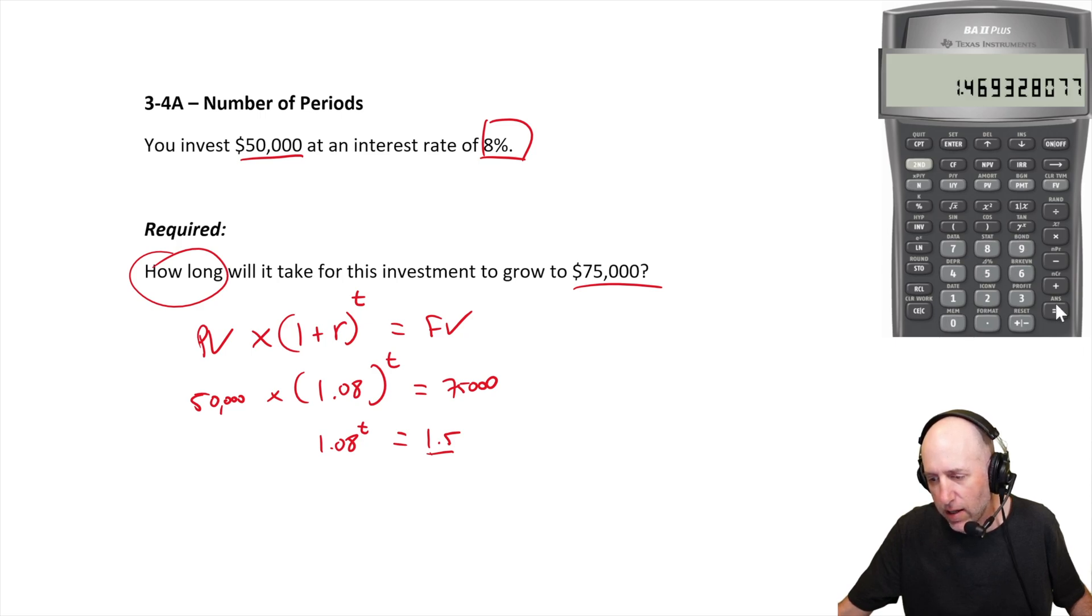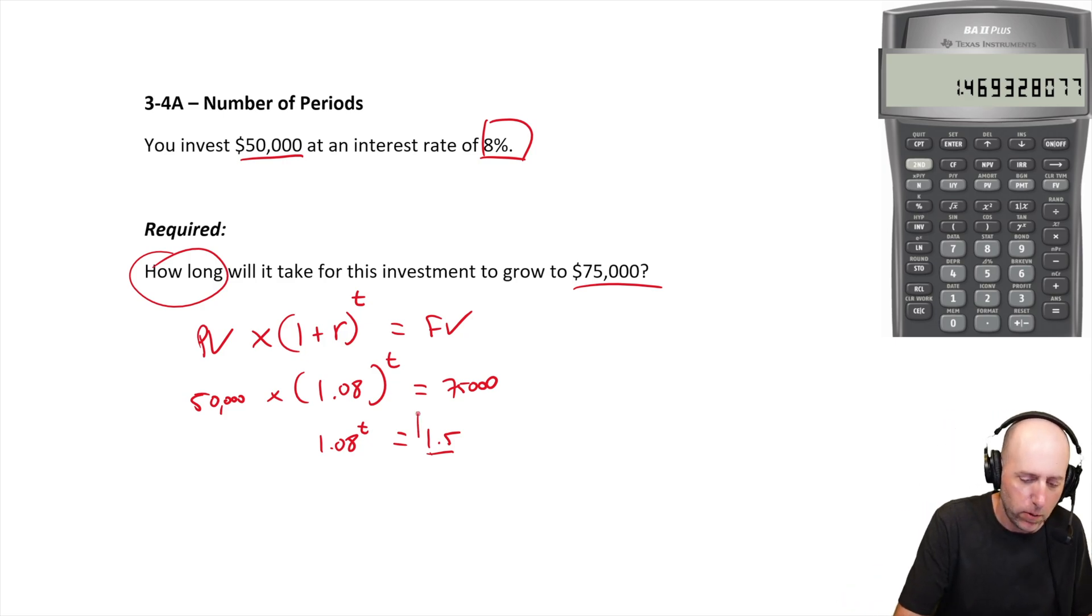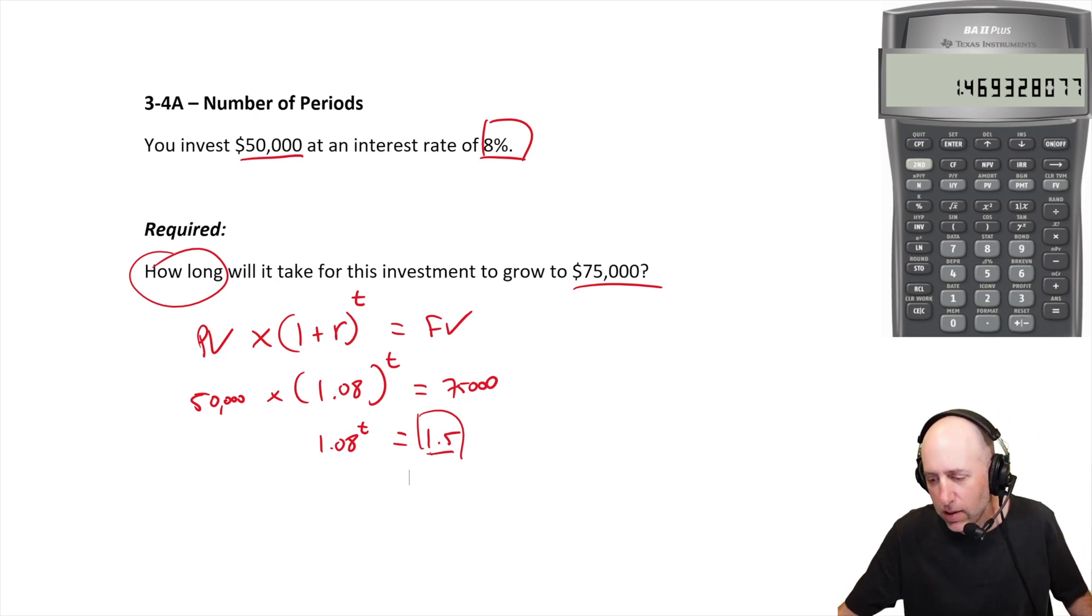So 1.2 was too low, 1.62... let's go a year less. 1.08 to the power of 5 - oh I'm closer now, 1.47. I want to be at 1.5 but I'm at 1.47, so it's a little bit higher than 5 years. 1.08 to the power of 5.2 years - at 5.2 years I'm 1.49.